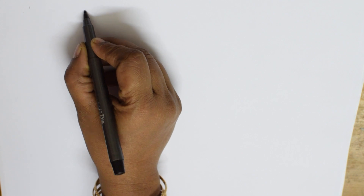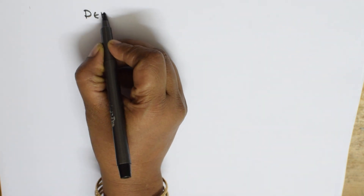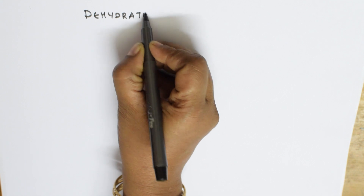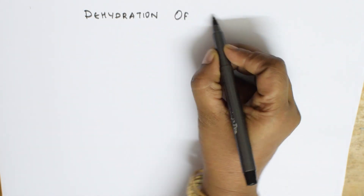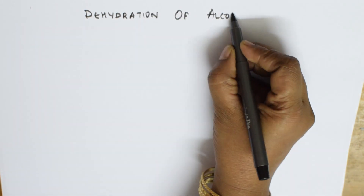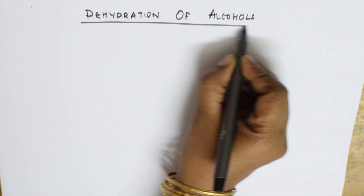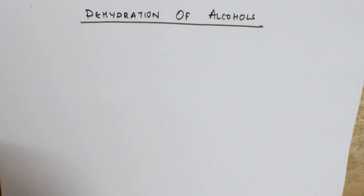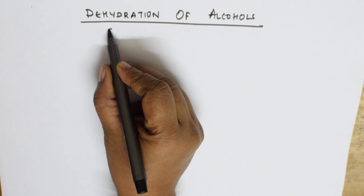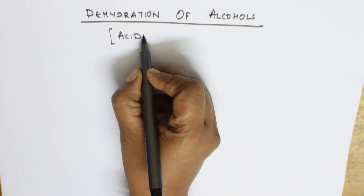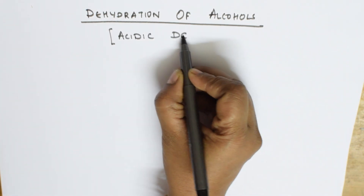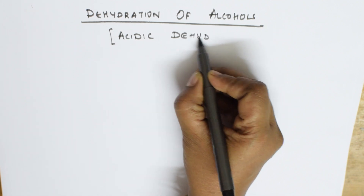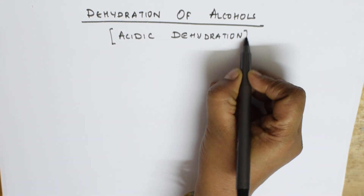The reaction I have chosen today is dehydration of alcohols. In dehydration of alcohols, as we know, dehydration is nothing but removal of water. I'm going to take out water using concentrated sulfuric acid — that's the reason we name this reaction acidic dehydration. Acidic dehydration means removing water in the presence of an acid medium, that is sulfuric acid.